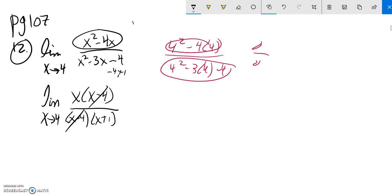And then X minus 4s cancel out. They divide out, so it's a 1. So now I have a limit as X approaches 4 of X over X plus 1.